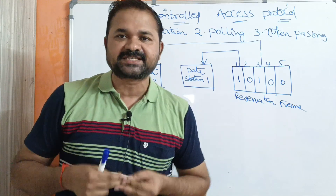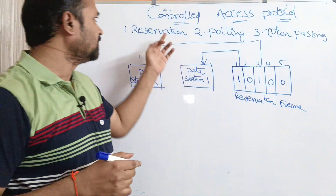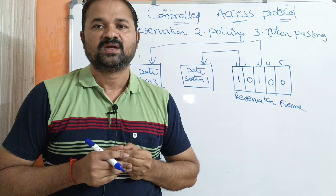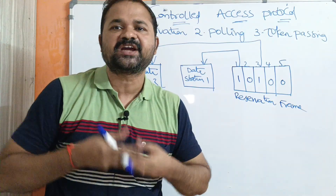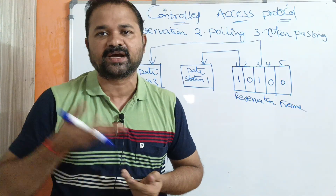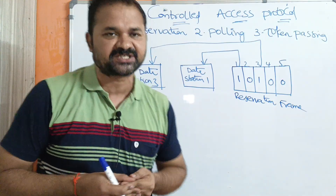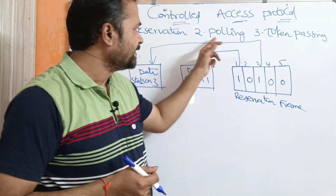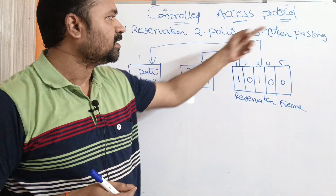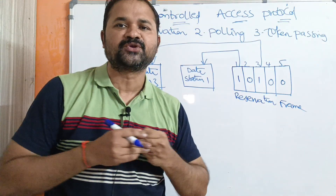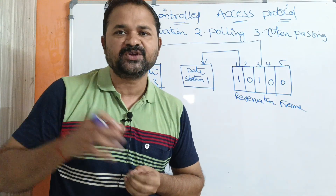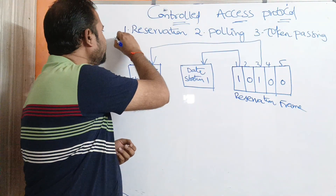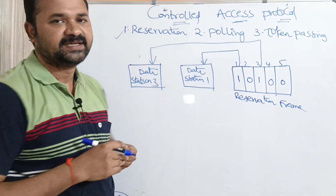Now let us discuss about controlled access protocols. We have three controlled access protocols or three methods. The first one is reservation, the second one is polling, and the third one is token passing. In this video we are going to discuss about the first one, that is reservation.